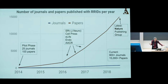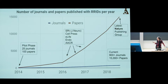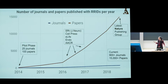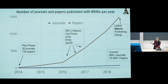How many journals are actually using RRIDs? This slide will soon be obsolete because we've moved to a new system. At the end of 2014 we had 100 papers and 25 journals. We've just passed the 900 journal mark, and we've got about 15,000 papers counting by PubMed ID — about 16,000 by DOI. In 2016 the project really started going up fast because Cell Press, eLife, and Endocrinology had joined us, and closer to 2017 the AACR joined. Our latest publishing group to join is Nature.